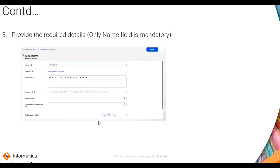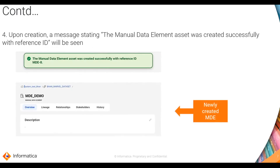Once you click on create, you will see a widget pop up where you have to provide the required details to create the manual data element. The name is the only mandatory field. Upon creation, a message stating that the manual data element asset was created successfully with the reference ID will be shown.